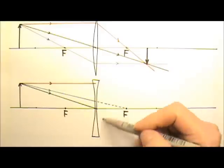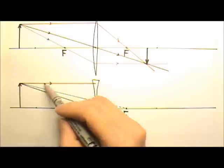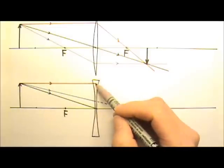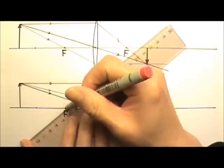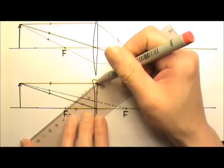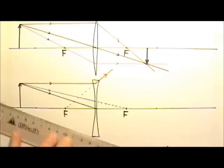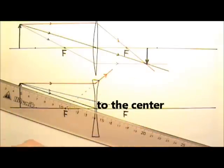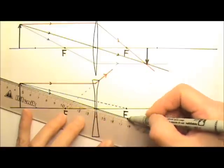A diverging lens does not really focus light — it's going to diverge the light. So the paraxial ray is not going to go to the focal point, but its extension would go to the focal point. So I have to make the extension to the focal point, and this ray would come out that way. The ray that goes to the focal point is going to just go straight through.